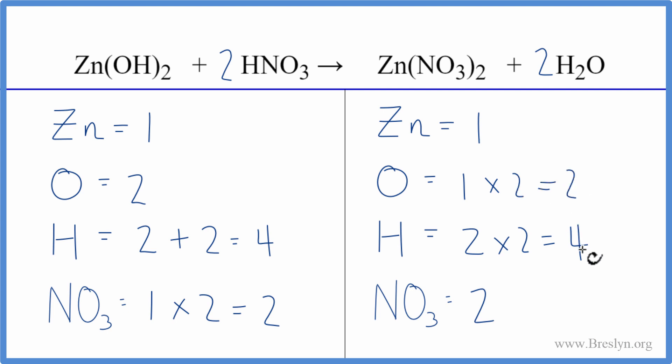This equation is balanced. So when we have something like a nitrate ion that stays together in the reaction, we have it here and here, it's really useful to consider it as one thing. It makes the balancing easier. We couldn't do that with the hydroxide ion because it was broken apart. We don't have a hydroxide on this side.